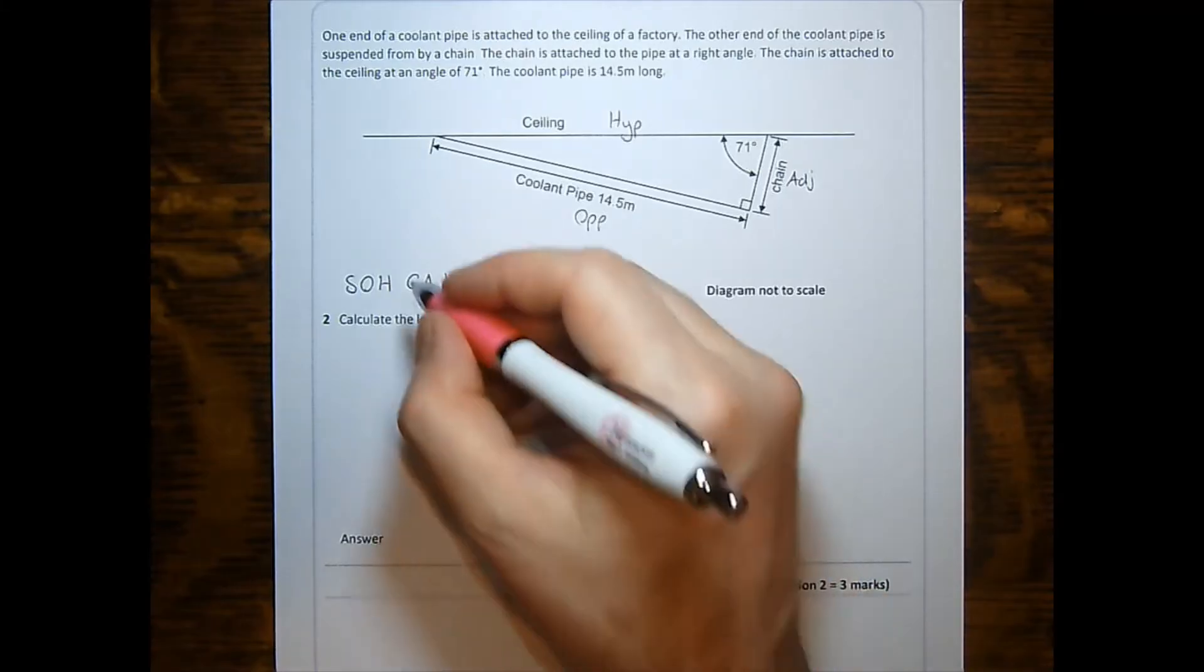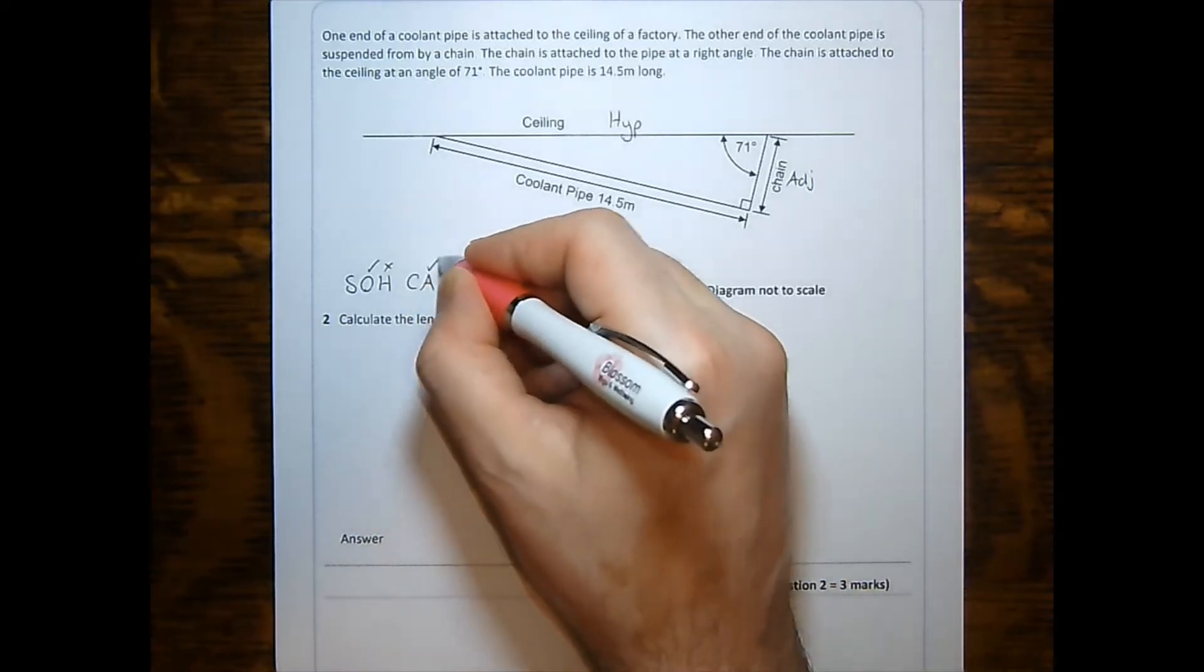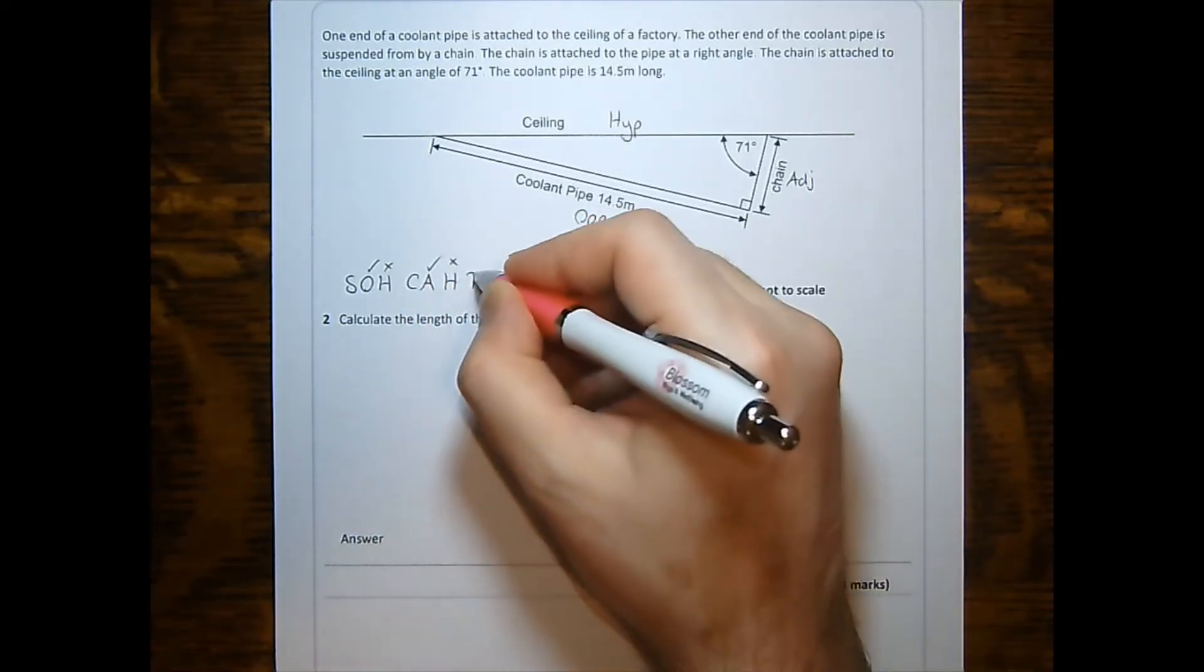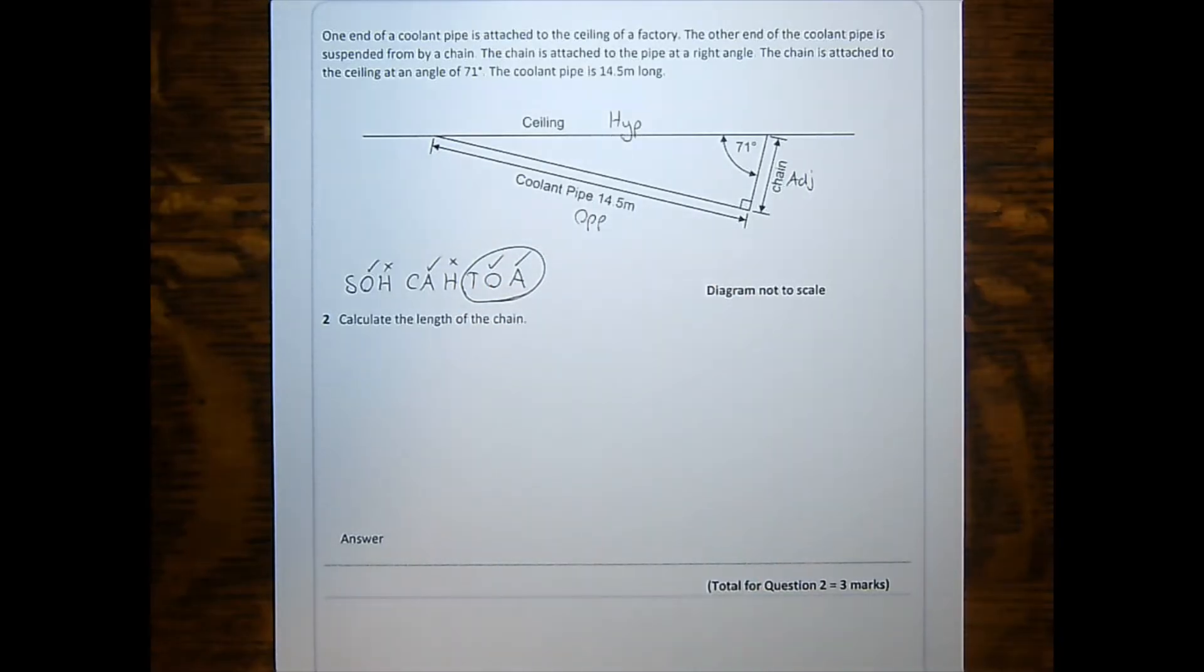So I have the opposite, I do not have the hypotenuse, I have the adjacent. I don't have the hypotenuse. I have the opposite and I have the adjacent. Therefore, I am focusing on tan.